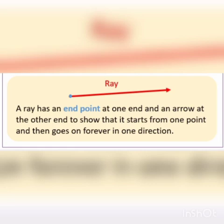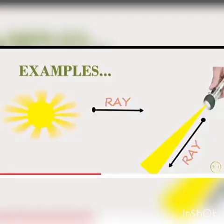Next, a ray. A ray has an endpoint at one end and an arrow at the other end, to show that it starts from one point and then goes on forever in one direction. A ray has only one starting point and no ending point — it extends infinitely in one direction.